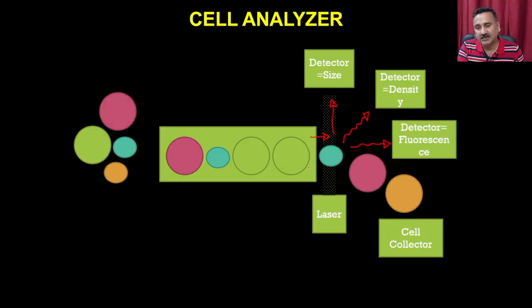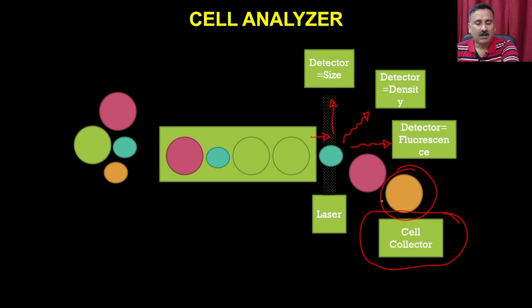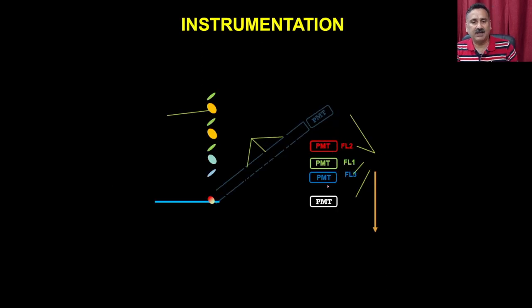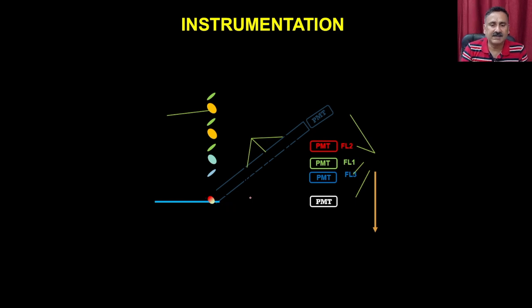Based on this information, you can ask the machine to collect cells with desirable features. The instrumentation has different components where cells flow into a chamber. Once they reach the center, they are illuminated by a laser, reflect a signal, and that signal is captured by different types of photomultipliers, which give information about size, density, and other properties.